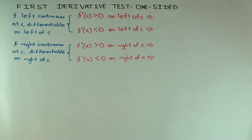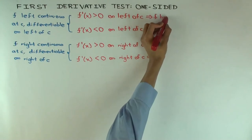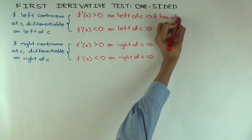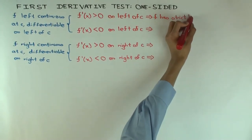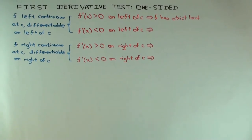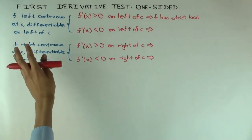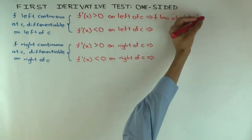Suppose f prime of x is greater than 0 on the left of c. What can you conclude about f at c? Is it a strict local max or strict local min? It's a strict local max. Now, the reasoning is not about the difference quotient for the left-hand derivative — that would be if you were taking the left-hand derivative. Here we are taking the derivative at points on the left, which is different. So the derivative being positive on the left means the function is increasing.